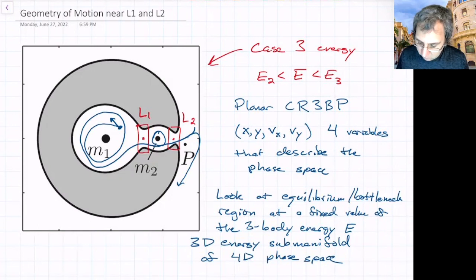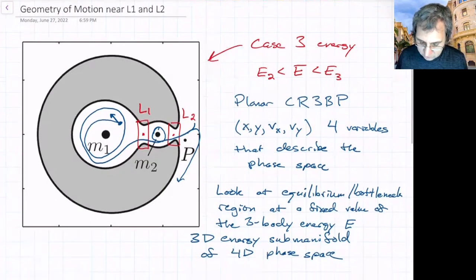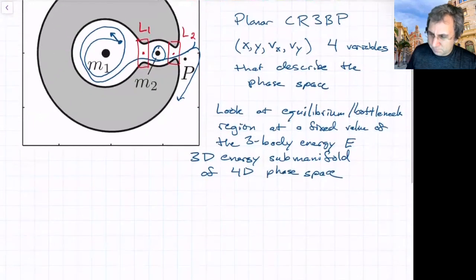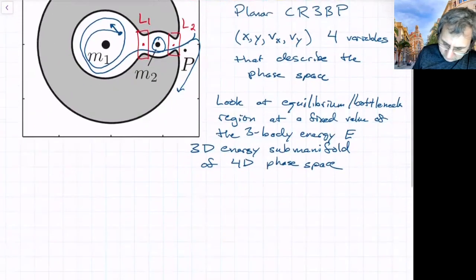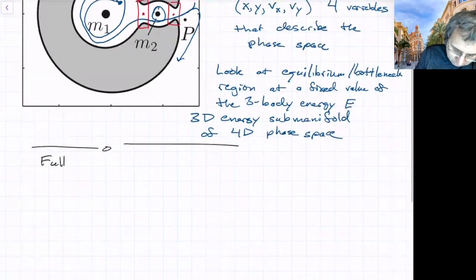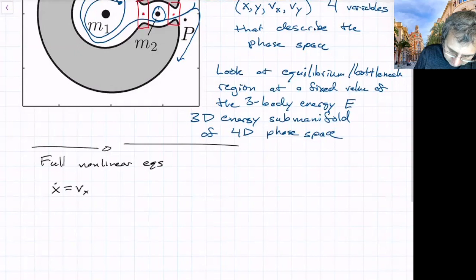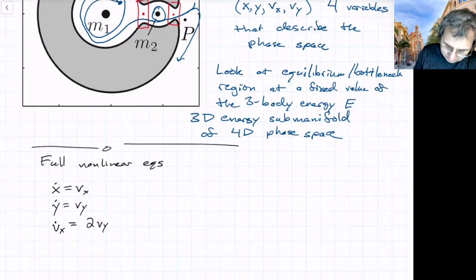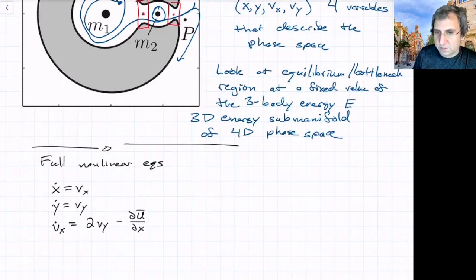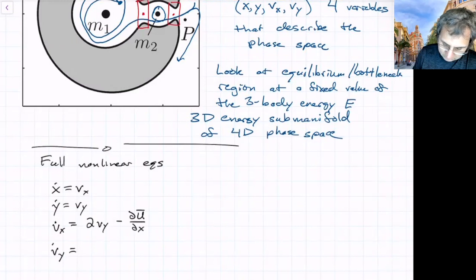Last time we talked about what the linearized equations of motion were, starting with the full nonlinear equations of motion. We have x-dot equals vx, y-dot equals vy, and then vx-dot equals 2vy minus the partial of U-bar with respect to x, where U-bar is the effective potential energy. And vy-dot is negative 2vx minus the partial of U-bar with respect to y.